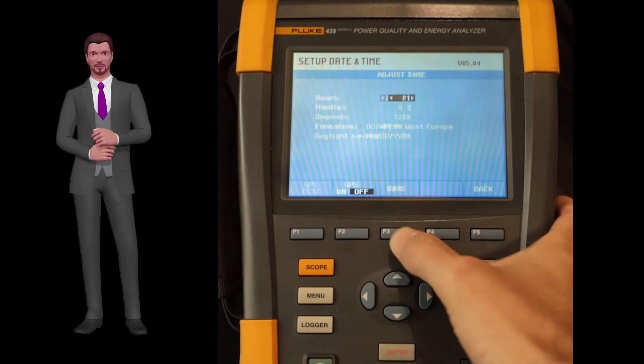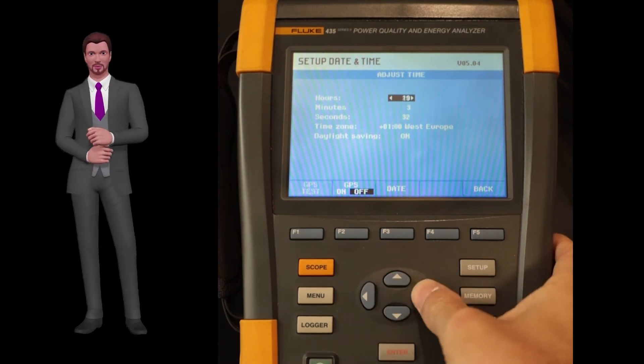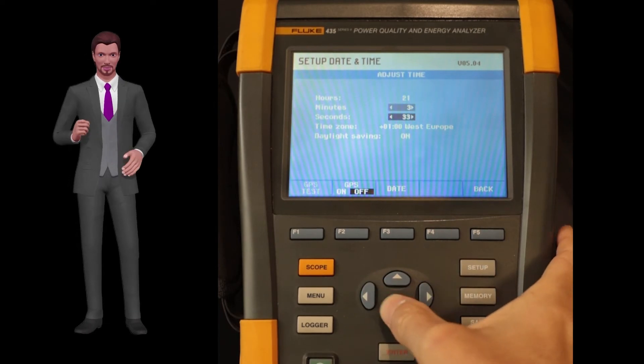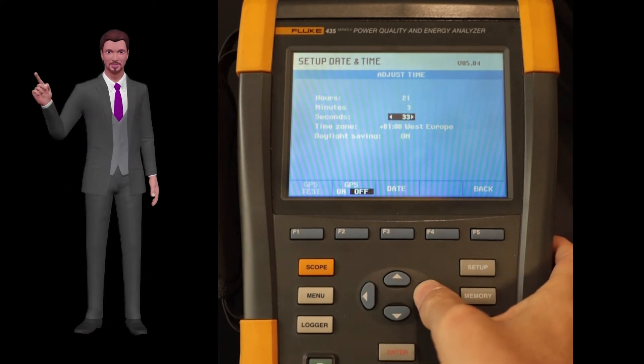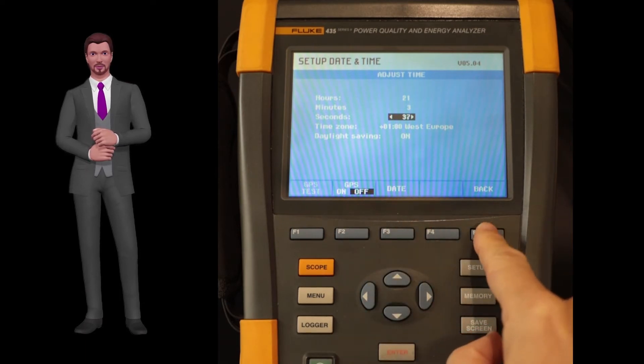Now with F3 you can go on to adjust the time. Press F3 and you can set the hour, minutes, seconds and time zone. As you can see now, the option to modify the date appears on F3. Once the appropriate changes have been made, we select F5 back.